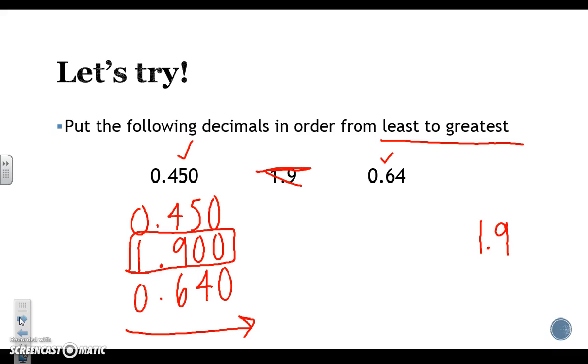We already did our ones place. So now let's move over to the right side of the decimal and look at our tenths place. We have a six and we have a four. Those are not the same number so we have to ask ourselves, what's the bigger number, four or six. We know that six is a bigger number than four, meaning that it would go in between the smallest and the largest. We finished with this one, leaving us to have our smallest decimal of 0.450.